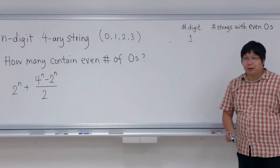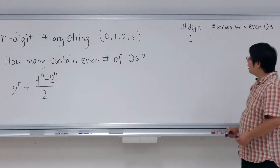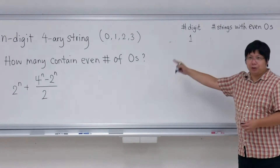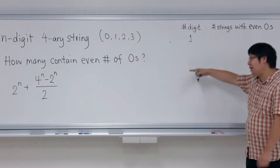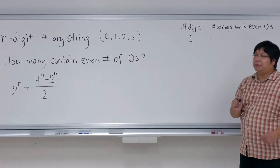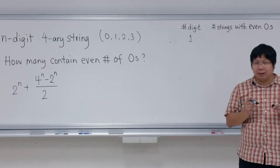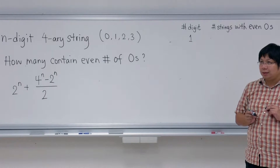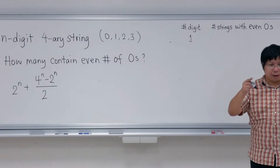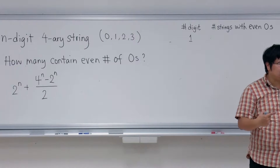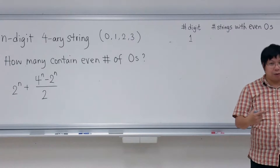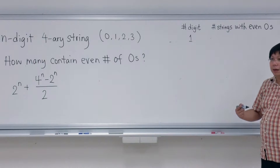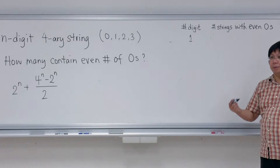Let's check the formula. If there is just one digit, how many strings have even number of zeros? There are only four strings: zero, one, two, or three. We know that three of them (one, two, three) have an even number of zeros — zero zeros counts as even.